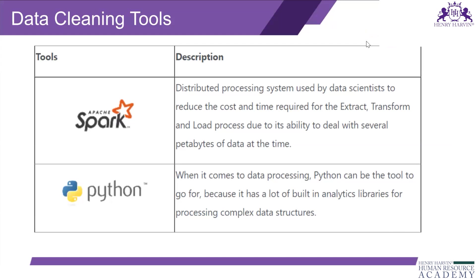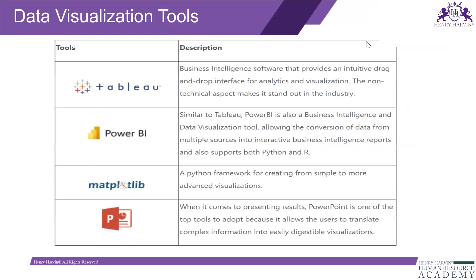Spark is able to deal with several petabytes of data at a time. When it comes to data processing, Python can be the tool to go for because it has a lot of built-in analytics libraries for processing complex data structures. Tableau is a business intelligence software that provides an intuitive drag-and-drop interface for analytics and visualization; its non-technical aspect makes it stand out in the industry.